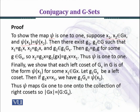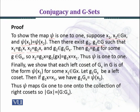We have assumed that x₁ and x₂ are arbitrary elements which belong to the orbit G_x, and psi(x₁) and psi(x₂) are equal, that is the images are equal. Then there exist g₁, g₂ belonging to G such that x₁ = g₁·x, x₂ = g₂·x, and g₂ belongs to g₁·G_x. So g₁·g₂ gives x₂, and g₂ belongs to g₁·G_x.